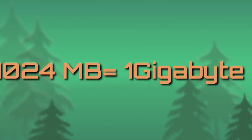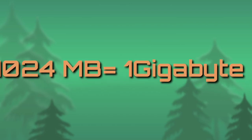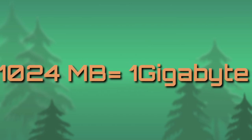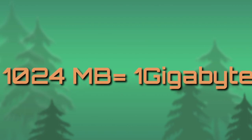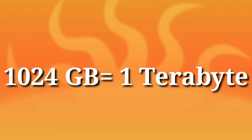1024 MB is equal to 1 GB, gigabyte, and 1024 GB is equal to 1 TB, terabyte. These are the basic measuring units of data.